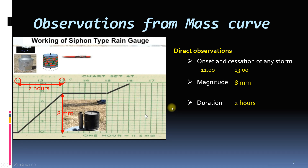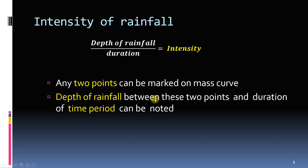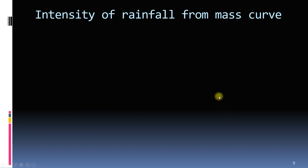Indirectly, we can find the intensity from the mass curve by finding the slope. Let us define the intensity of rainfall. Intensity of rainfall is the ratio of the total amount of rain, expressed as rainfall depth, falling during a given period to the duration of that period. We can find intensity of rainfall by taking any two points on the mass curve, noting the depth of rainfall and the time between these two points, and applying the formula which is the slope of the mass curve. Intuitively, intensity is like speed and has the same units.